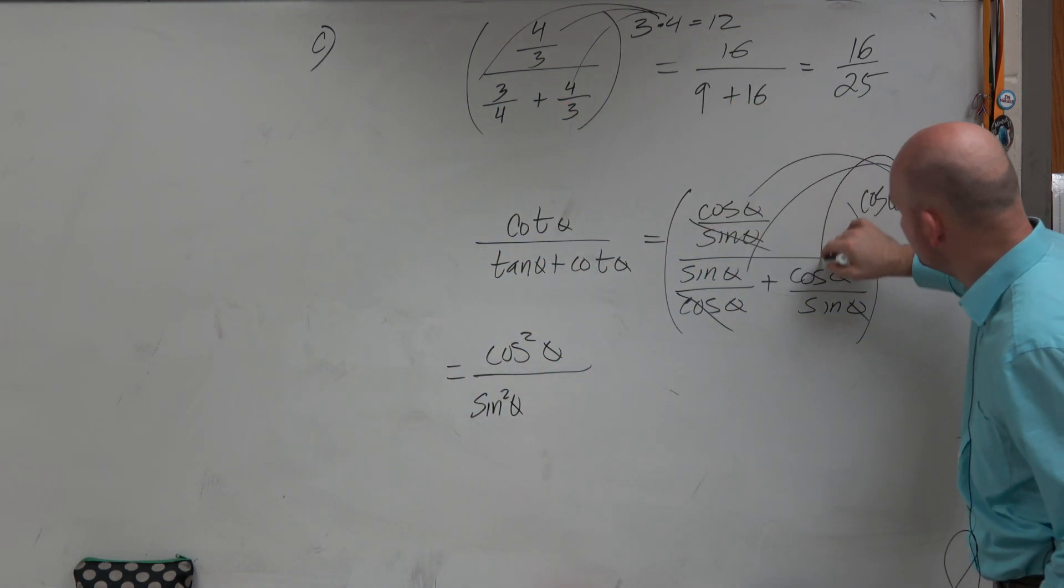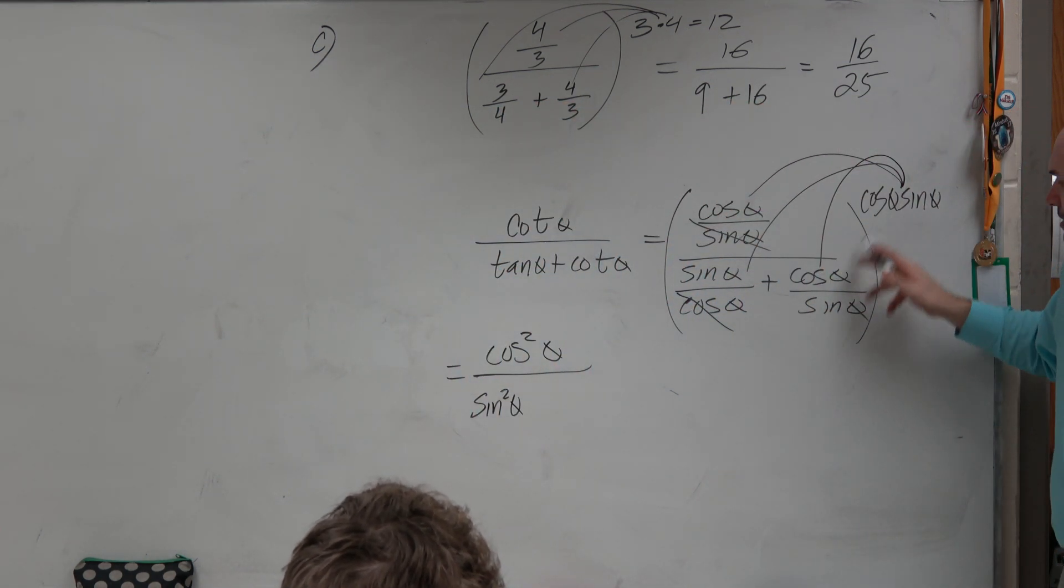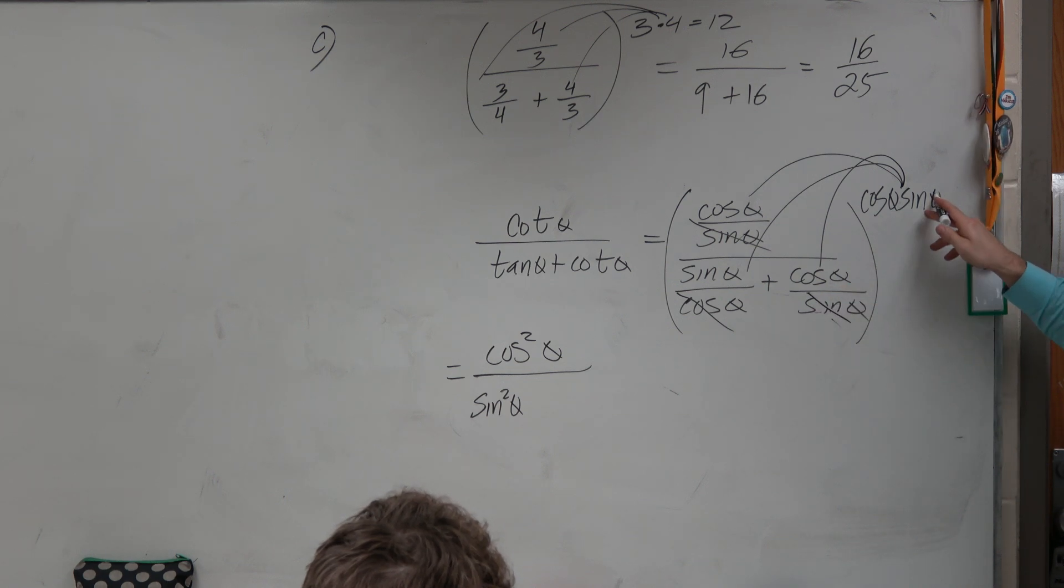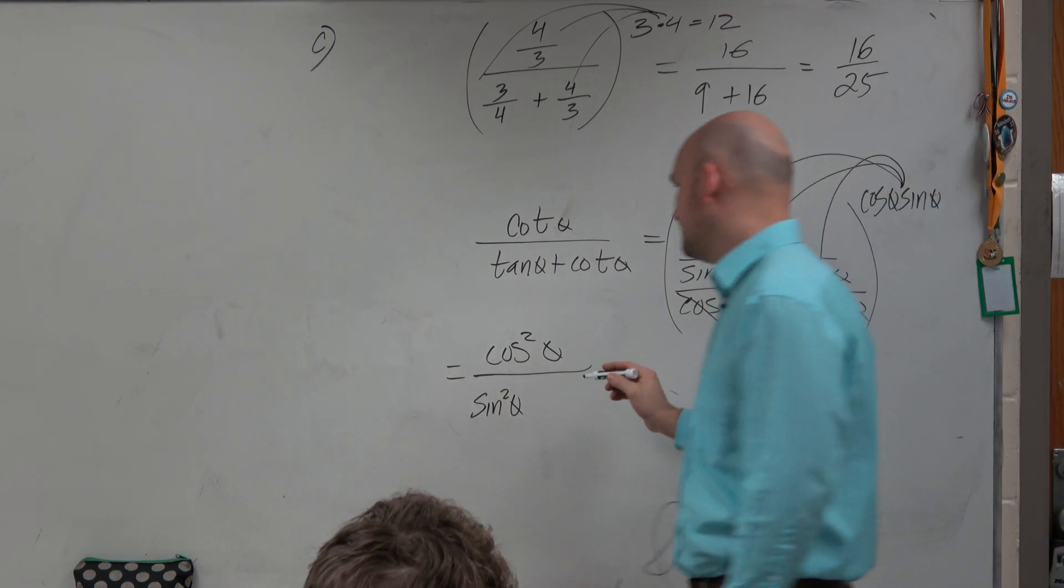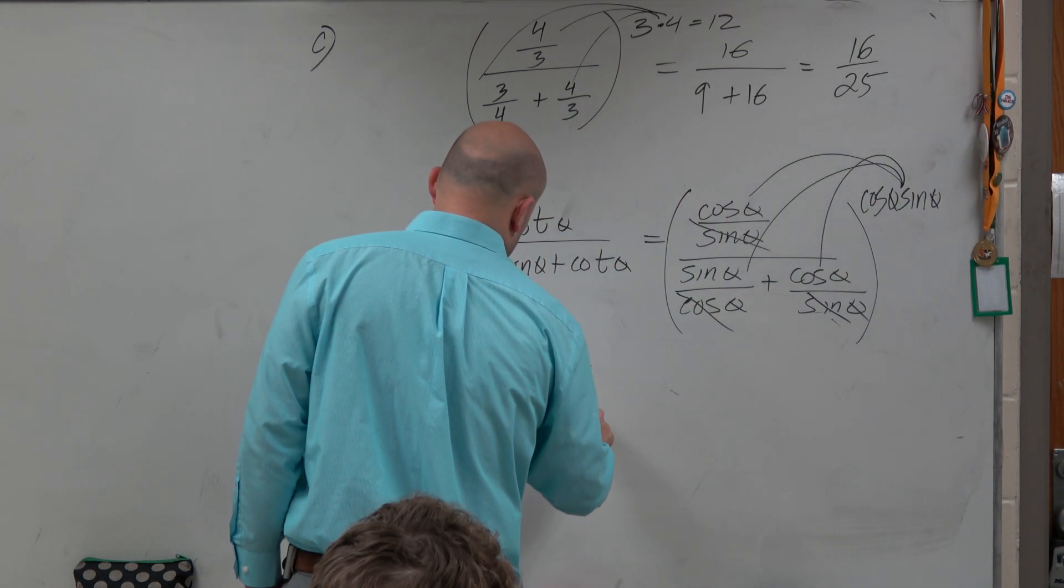And then when I would multiply this times this, my sines would divide out, leaving me with cosine times cosine, which is cosine squared of theta.